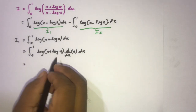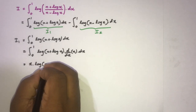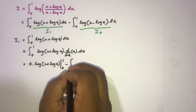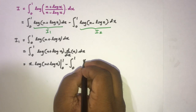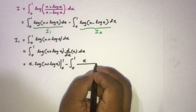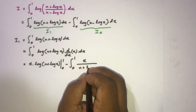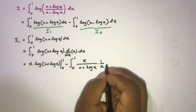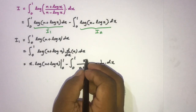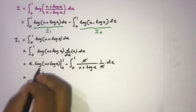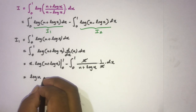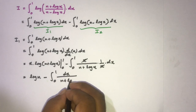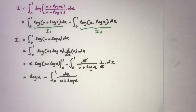Using the product of these two functions, we get x times natural log of (n plus natural log of x) evaluated from 0 to 1, minus the integral from 0 to 1. The derivative of natural log of (n plus natural log of x) via the chain rule gives 1 over (n plus natural log of x) times 1 over x. The x's cancel, and plugging in 1 gives natural log of n, minus the integral from 0 to 1 of dx over (n plus natural log of x). This is another interesting integral.